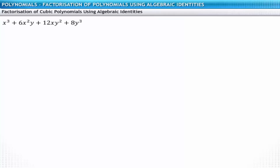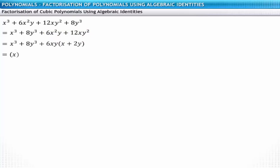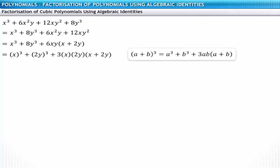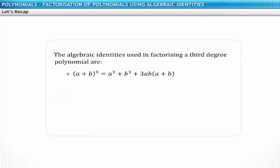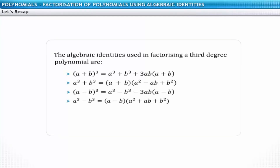Let's go back and review the cubic polynomial that we need to factorize. The obtained polynomial is similar to the expanded form of a cubic identity. Comparing the polynomial with the identity, the polynomial can be expressed in the identity's form, and the factors of the polynomial are obtained. Cubic polynomials can be factorized by using the algebraic identities involving third-degree terms.